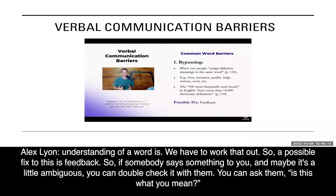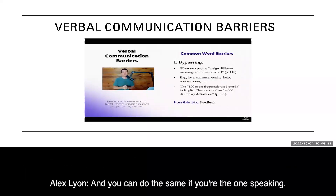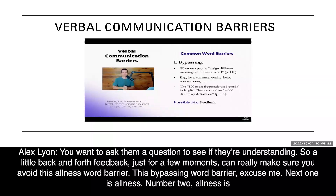A possible fix to bypassing is feedback. If somebody says something to you and it's a little ambiguous, you can double check it with them — ask, is this what you mean? You can do the same if you're the one speaking: ask a question to see if they're understanding. A little back and forth feedback can really make sure you avoid this bypassing word barrier.